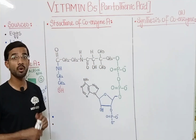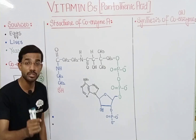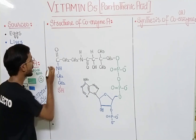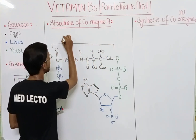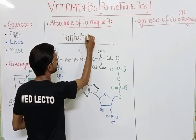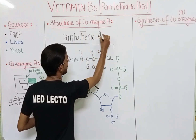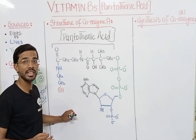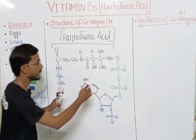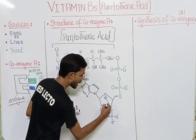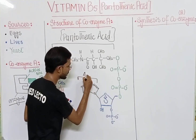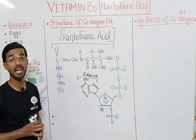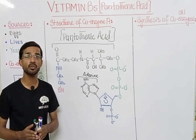Now if we see the structure of Coenzyme A, in which you will find pantothenic acid or vitamin B5. At the top side there is the attachment of the pantothenic acid, which is part of Coenzyme A. There are also phosphate groups attached to the sugar, and here is the sugar and the adenine, which is the nitrogenous base.